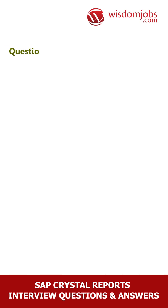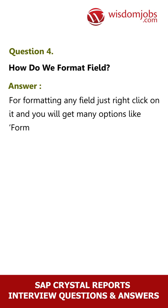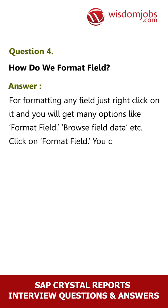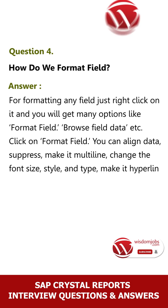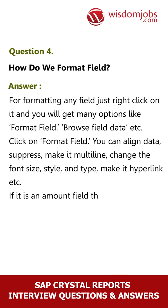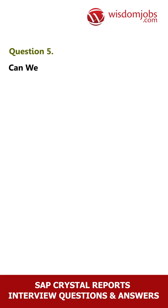Question 4: How do we format a field? Answer: For formatting any field, just right-click on it and you will get many options like Format Field, Browse Field Data, etc. Click on Format Field — you can align data, suppress, make it multi-line, change the font size, style and type, make it a hyperlink, etc. If it is an amount field, you can display the currency symbol also. Right-click on the field and select Format Field.